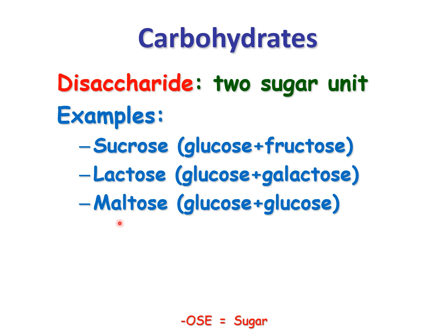Maltose — that's my favorite. Maltose is two glucoses linked together; it has a lovely creamy flavor. These are all examples of common disaccharides made up of two monosaccharides formed by dehydration synthesis and broken down by hydrolysis. Here's an example of maltose: two glucoses linked together in a covalent glycosidic bond.